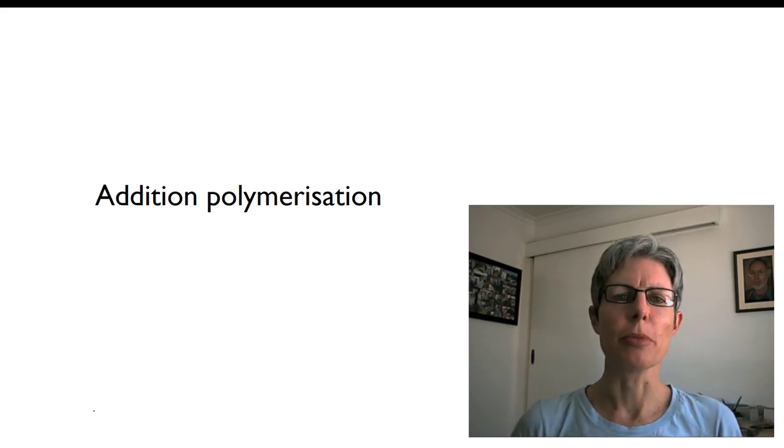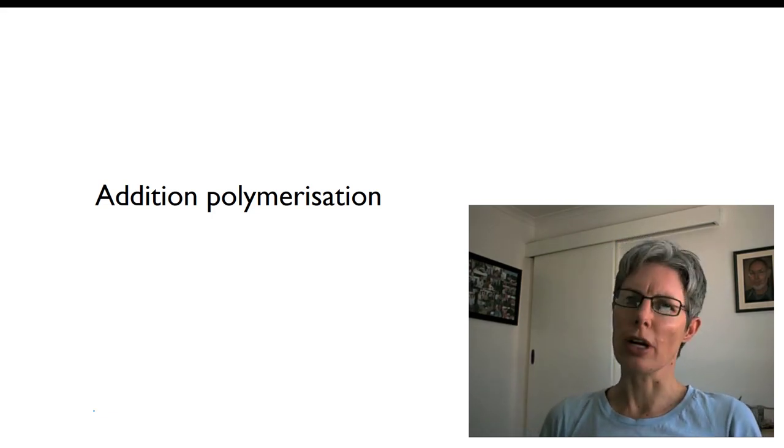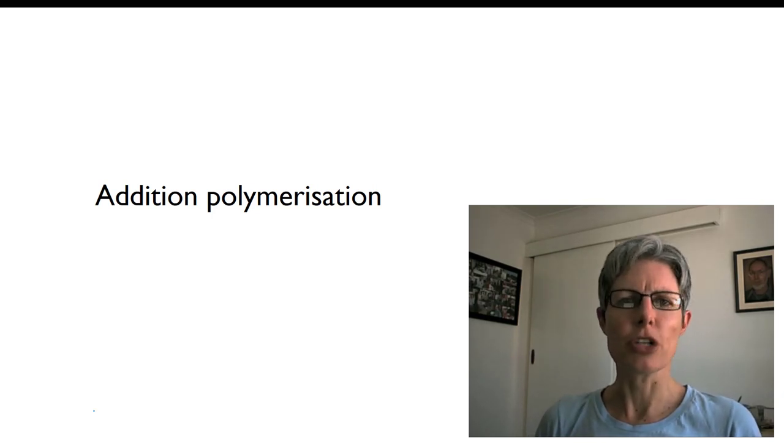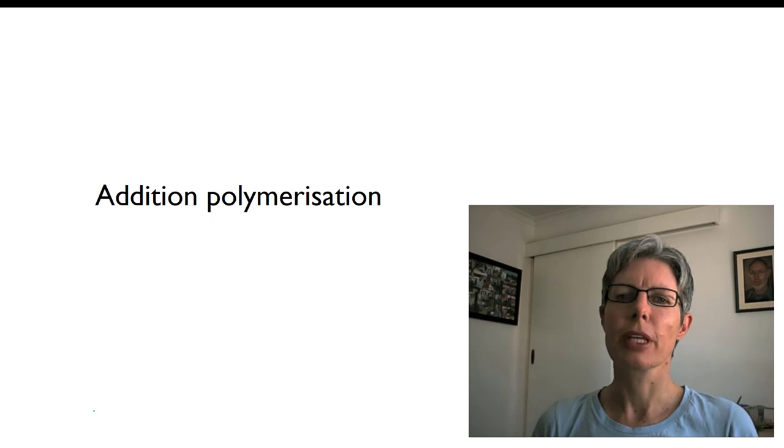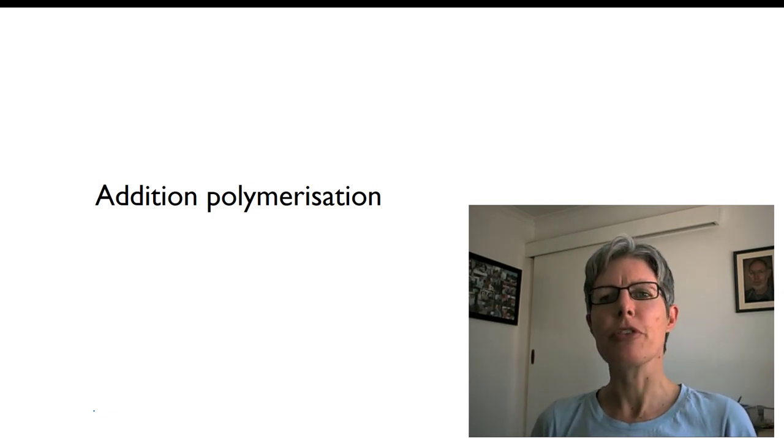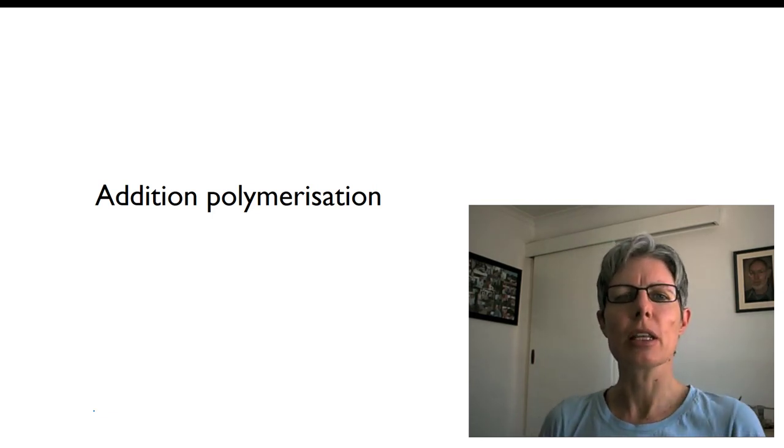Synthetic polymers, those made by humans, can be broadly grouped into two kinds. Those that are made by addition polymerization and those that are made by condensation polymerization. In this video we'll look specifically at addition polymerization and the kinds of polymers that can be made by it.